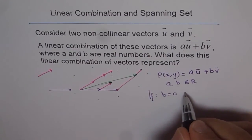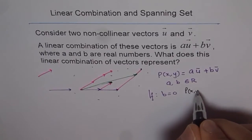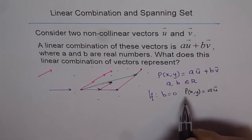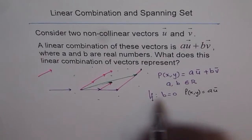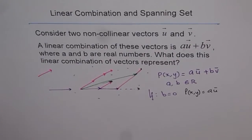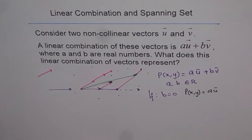In that case, we will have p, x, y, equals to a times u. That means it is a scalar multiple, so it is along the same line as u. So it becomes a collinear vector.